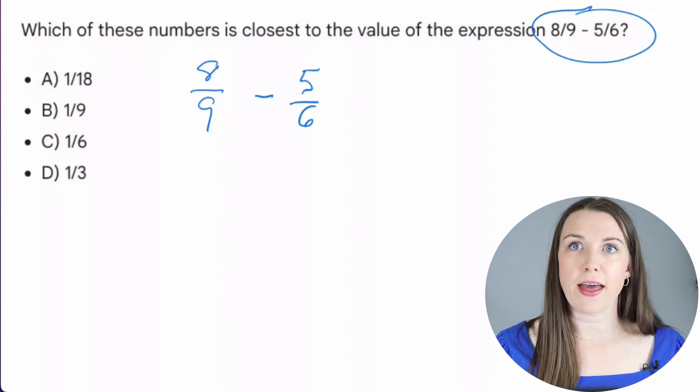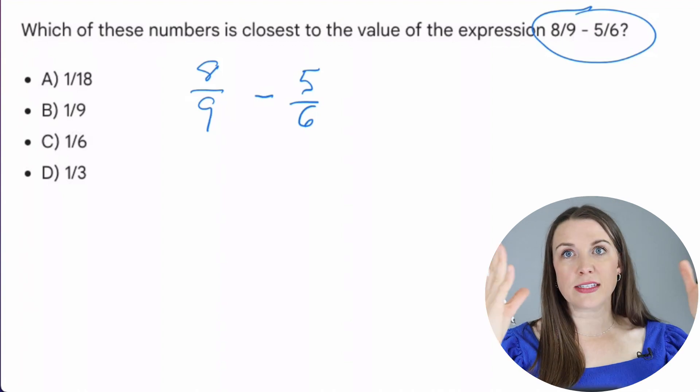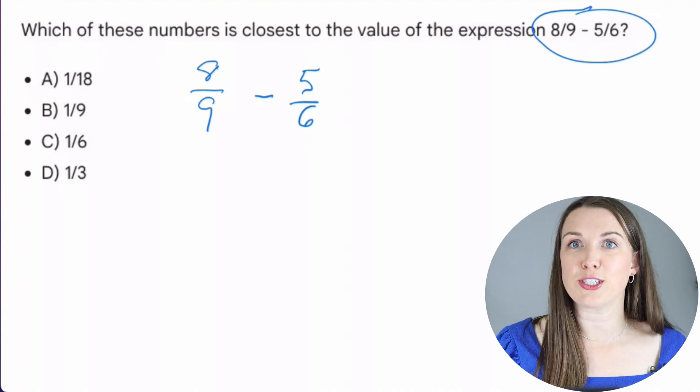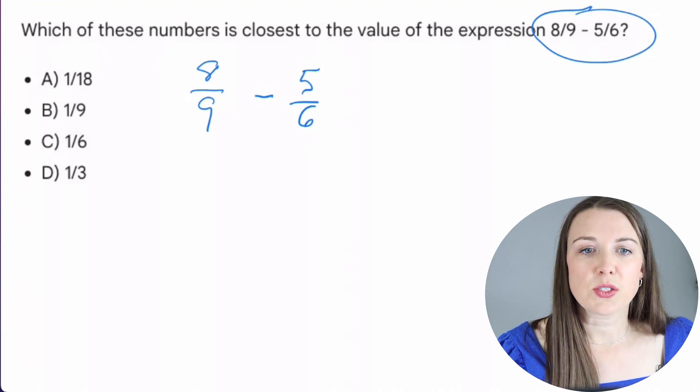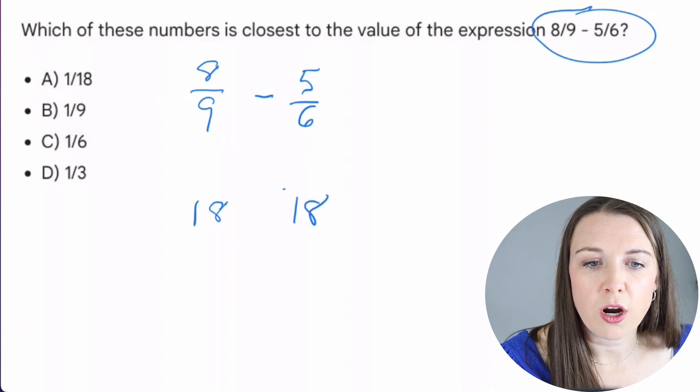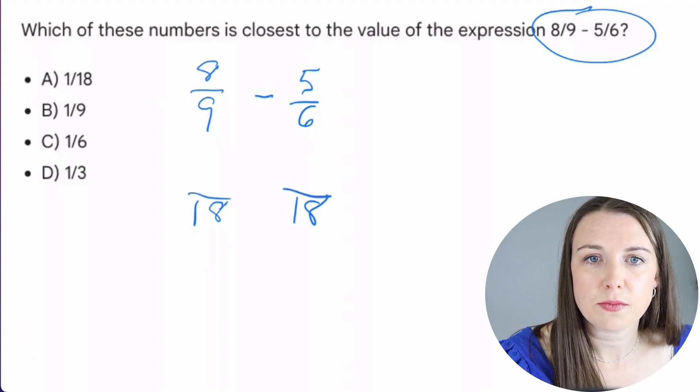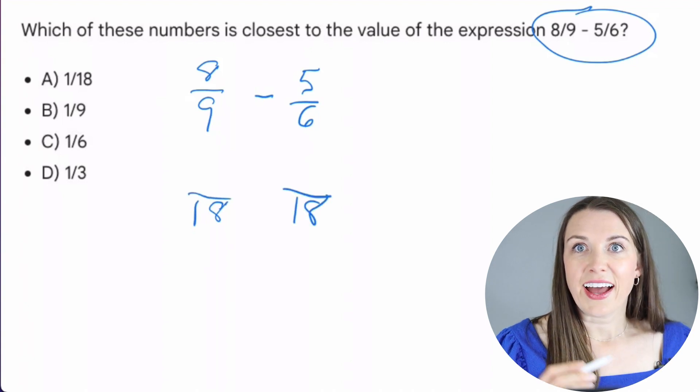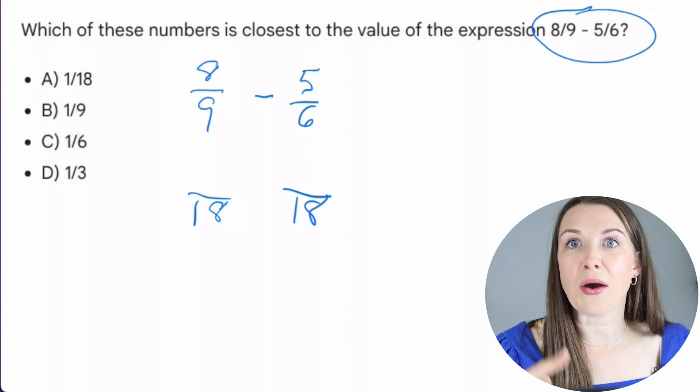So we could multiply them, but there's a number that is even smaller that they both go into, right? And that is 18. So we're going to take 18 and make that our bottom number or our denominator. Okay, so how many times does nine go into 18?